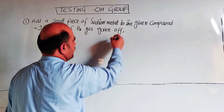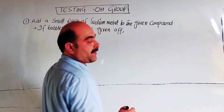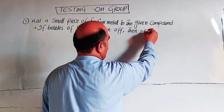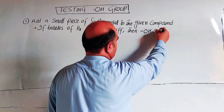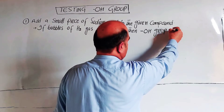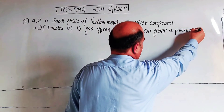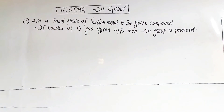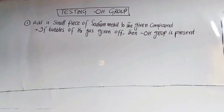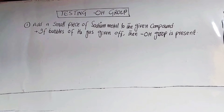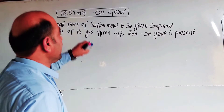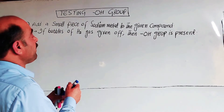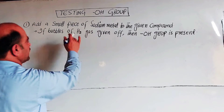If bubbles of hydrogen gas are given off, then the hydroxyl group is present. This confirms the presence of the OH group in the compound.